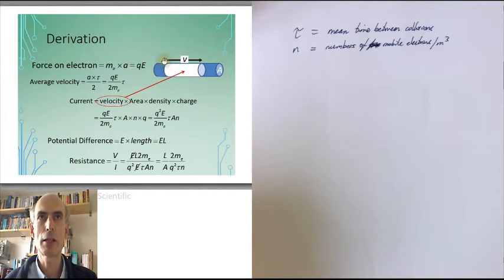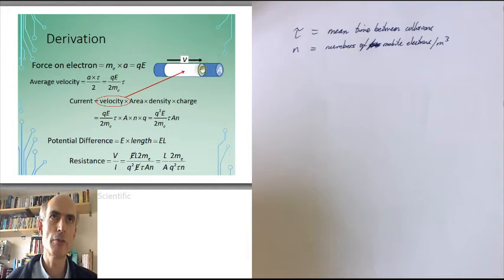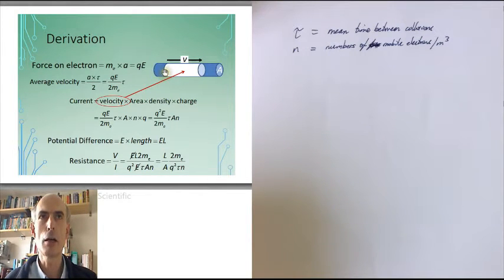If it's travelling in this direction with speed v, then any charge there, after one second will have travelled a distance v and will have arrived here. So everything in this volume must have passed that point there.